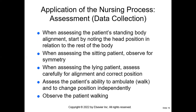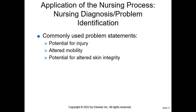Applying the nursing process — we assess the patient when standing, looking for proper alignment with the head in relation to the rest of the body. When sitting, we look for symmetry or slumping. If lying down, we assess for body alignment and correct positioning. When walking or ambulating, we look at whether they're walking effectively, limping, or favoring one side.